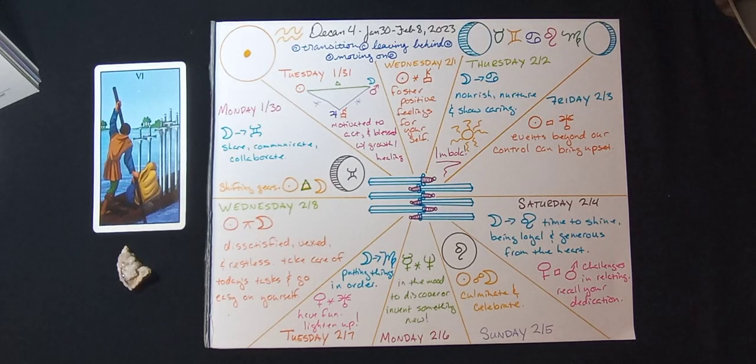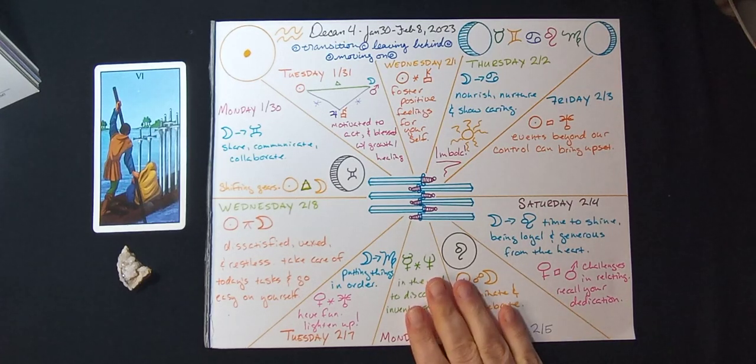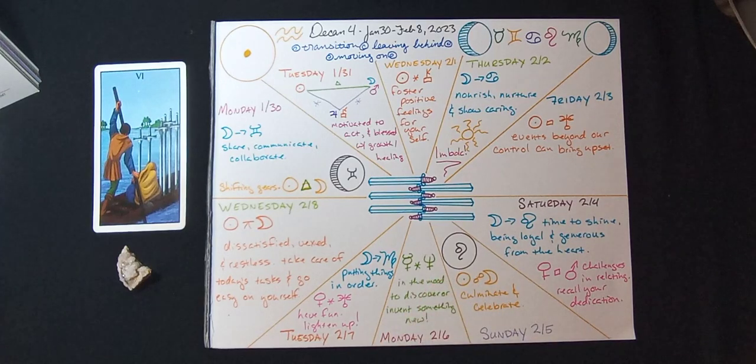Good morning friends and welcome back to Astrology Today. My name is Mel Rose and I'm here to quickly preview the next 10 days most impactful aspects with you.